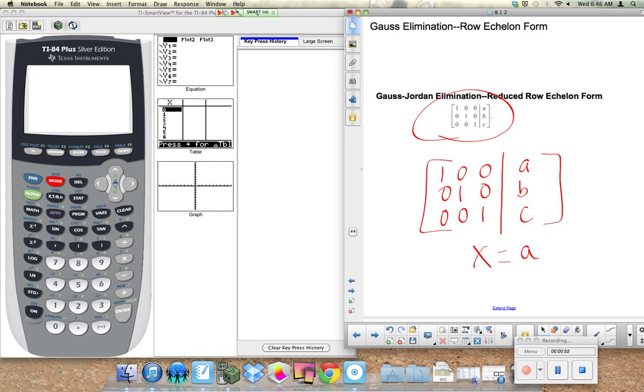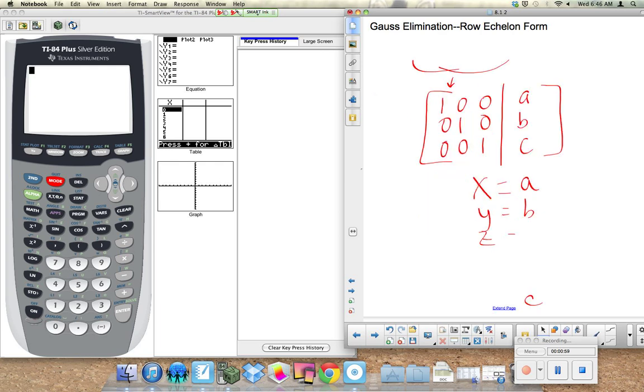This would mean that x would be a, because x is the first column, y would be b, and z would be c. So this is key. Obviously, the work is done for us if we know how to put it in our calculator. So reference this video if you forget how to use your calculator when you get to class. Write down a couple of the steps so that you can remember how to do this on your own.